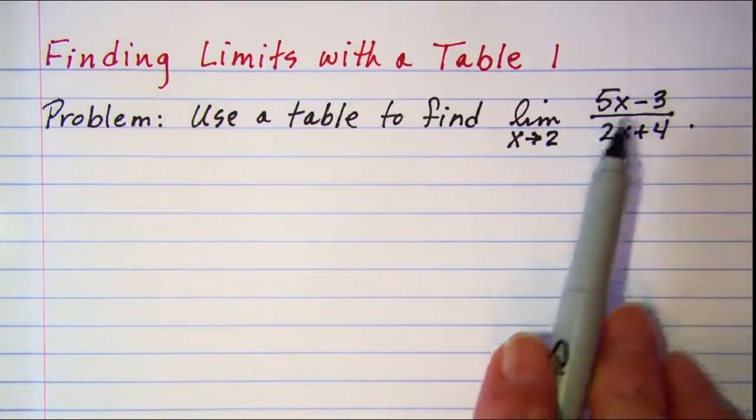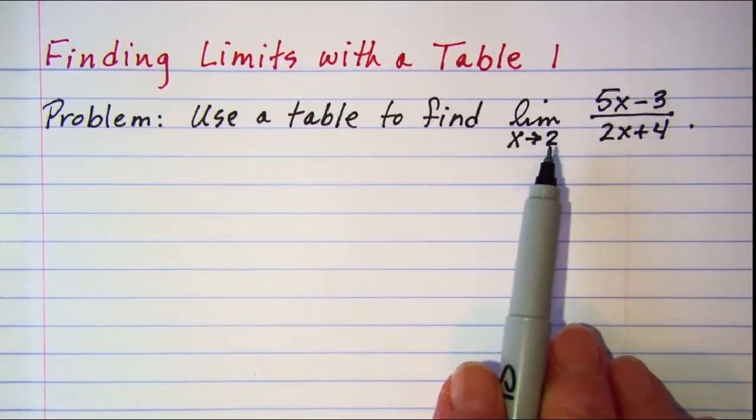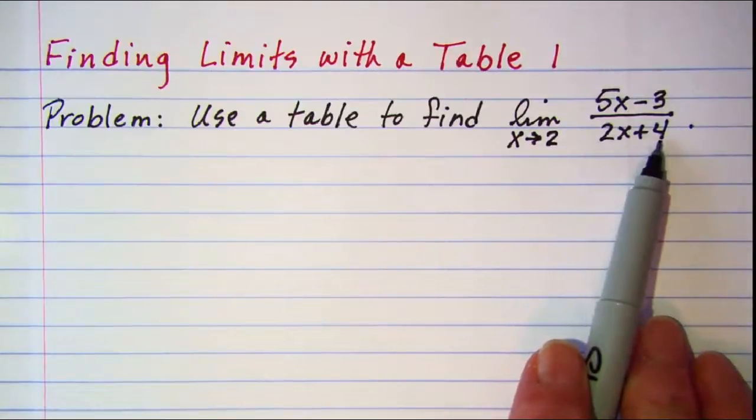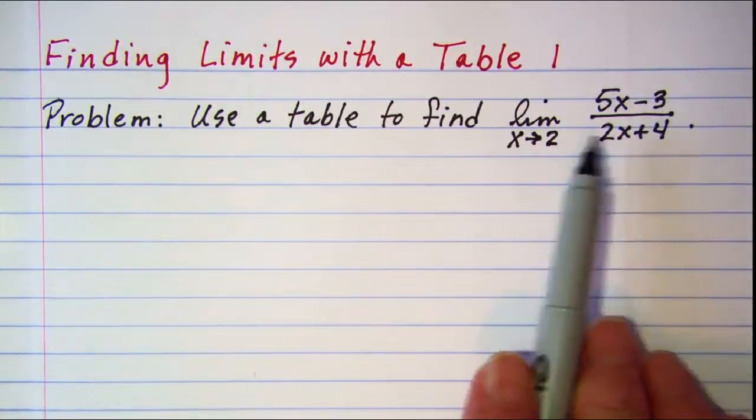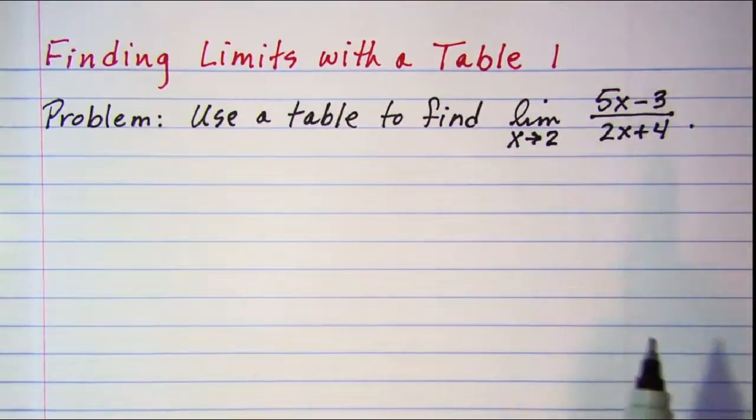Now this function limit can be found easily by doing direct substitution. We can put 2 in and we can see that there's no problem with division by 0. But I wanted to show you how to use a table also to find the limit.